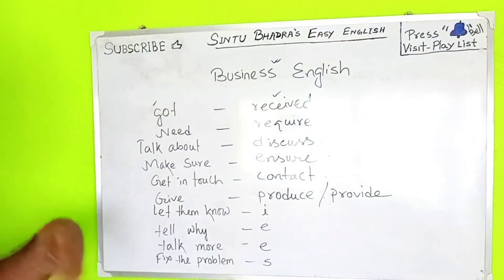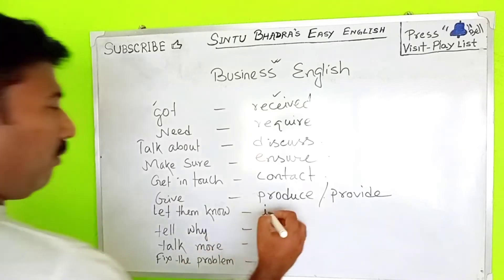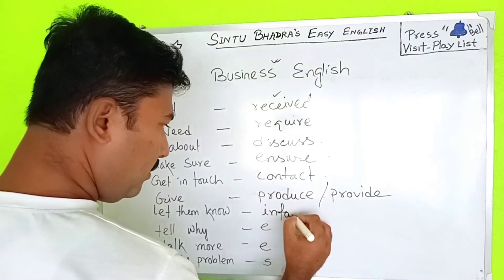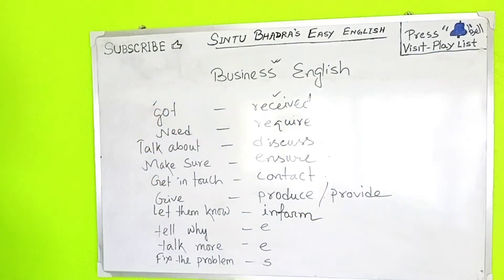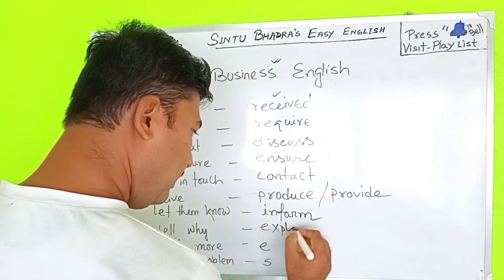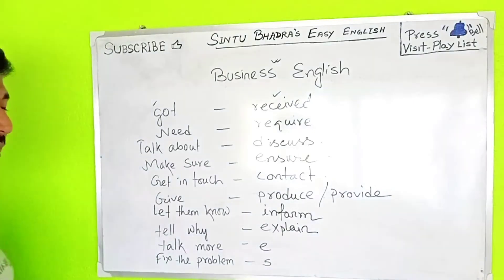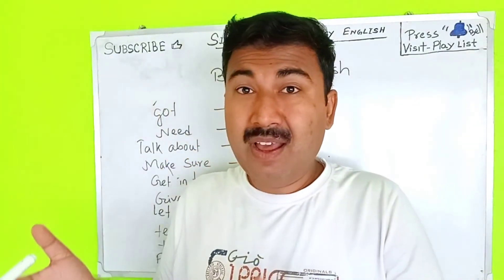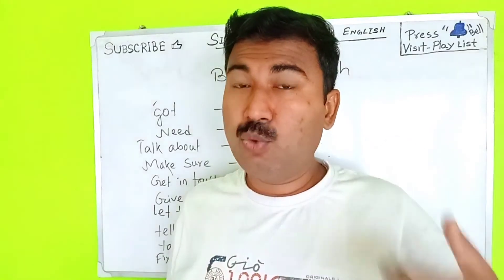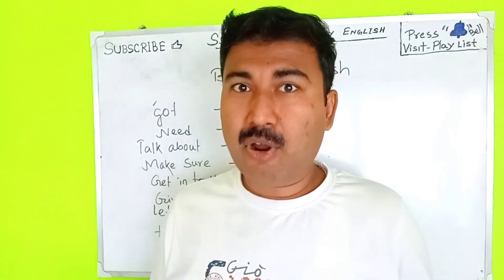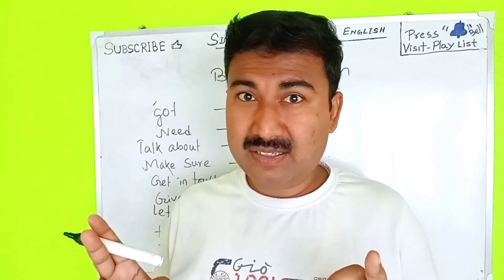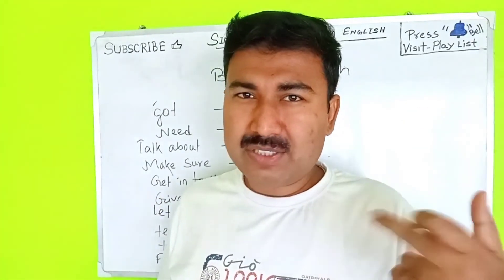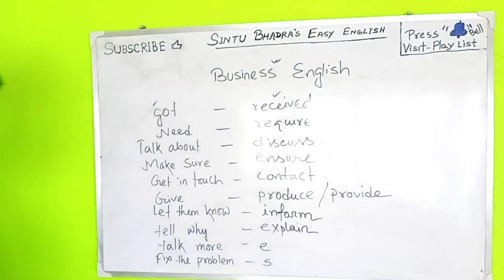Next: 'let them know' — in business English, use 'inform.' So 'inform' is far better than 'let them know.' After that: instead of 'till why,' use 'explain.' For example: 'Explain the problem.' 'Till why the problem' is a commanding language, so 'explain' is better and more appropriate in business English.